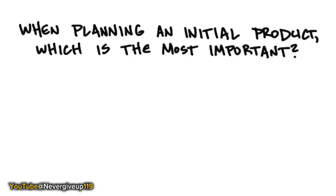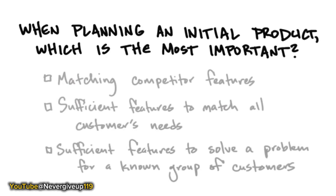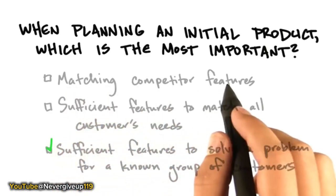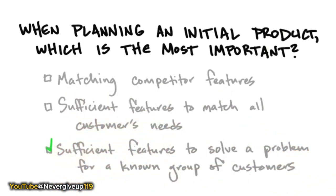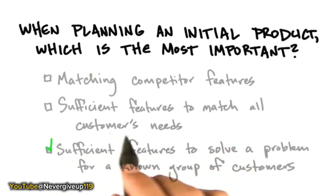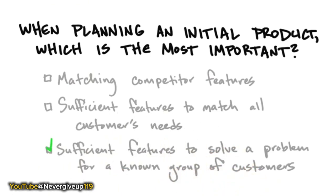When planning an initial product, the most important thing is finding sufficient features to solve a problem for a known group of customers. Matching competitive features is actually a going-out-of-business strategy unless you're in an existing market and you know which features customers have told you are more important. Startups don't have the resources to meet every possible customer wish on day one, so focus on enough features to solve a problem that's important enough for a known group of customers.